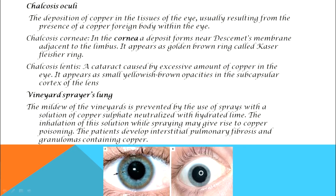Another condition is chalcosis lentis, where there is opacity of the lens of the eye — essentially a cataract caused by excess copper in the eye. It appears as small yellowish-brown opacities in the subcapsular area of the lens. This is also known as subcapsular cataract or sunflower cataract, and it is yellowish-brown or greenish in color.